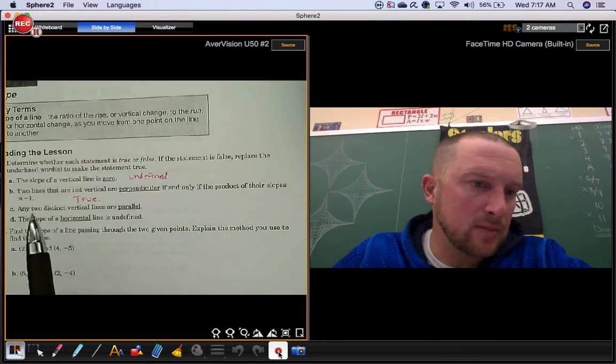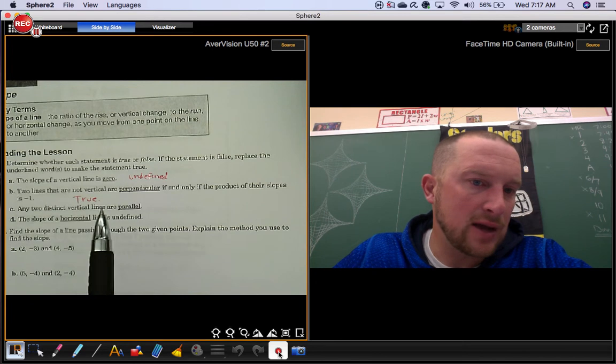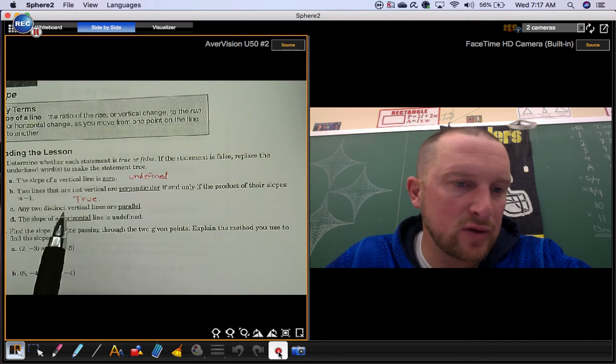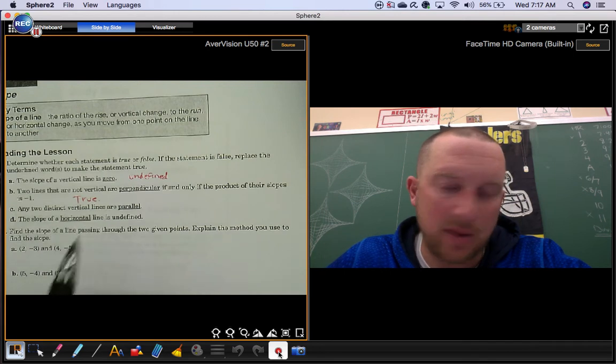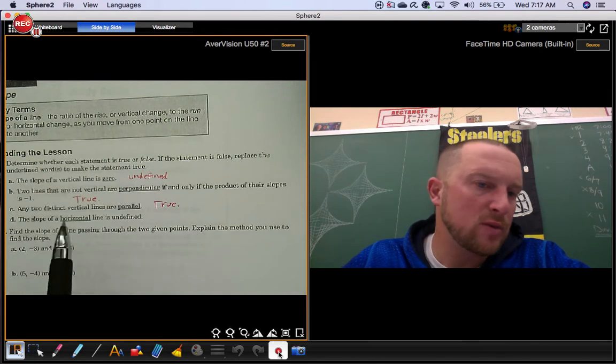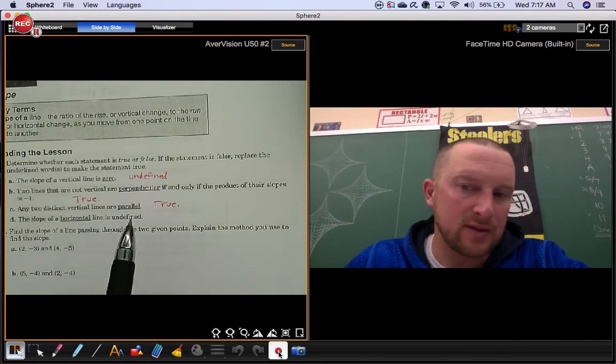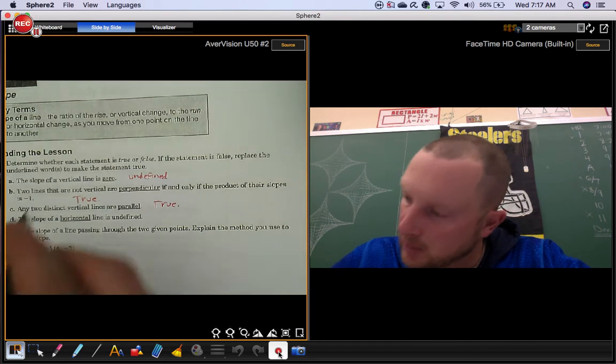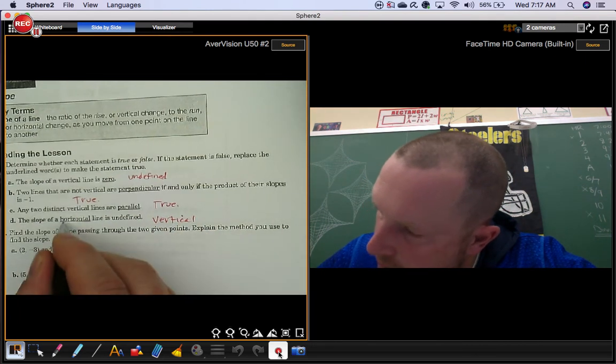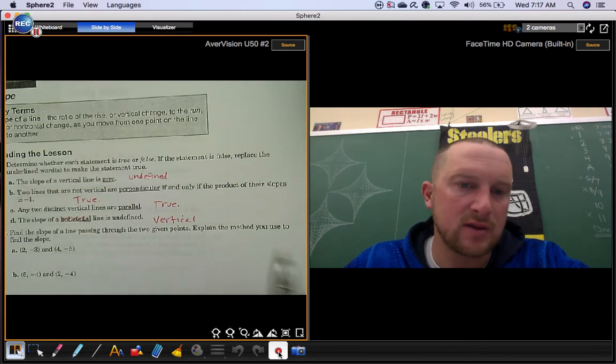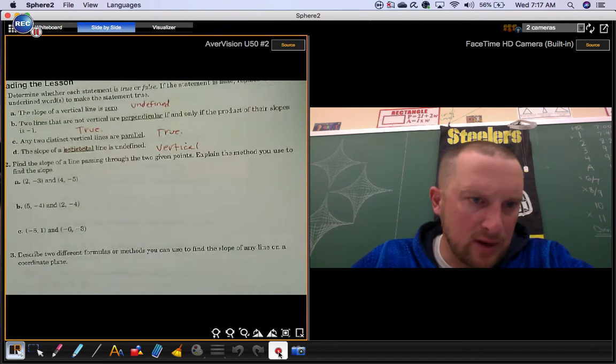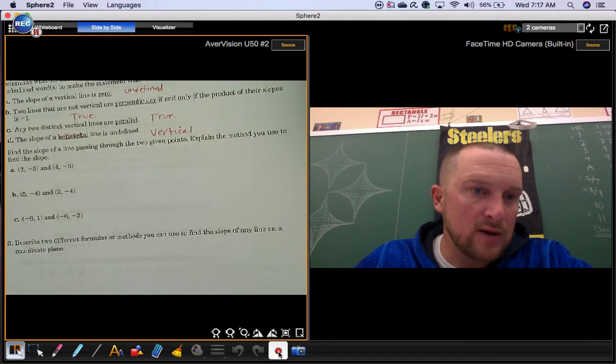Part C: Any two distinct vertical lines are parallel. Distinct just means different. So let's say we have two different vertical lines. Are they parallel? Definitely. Part D: The slope of a horizontal line is undefined. No, that's your vertical line. So it's not horizontal. Vertical lines have undefined slope.